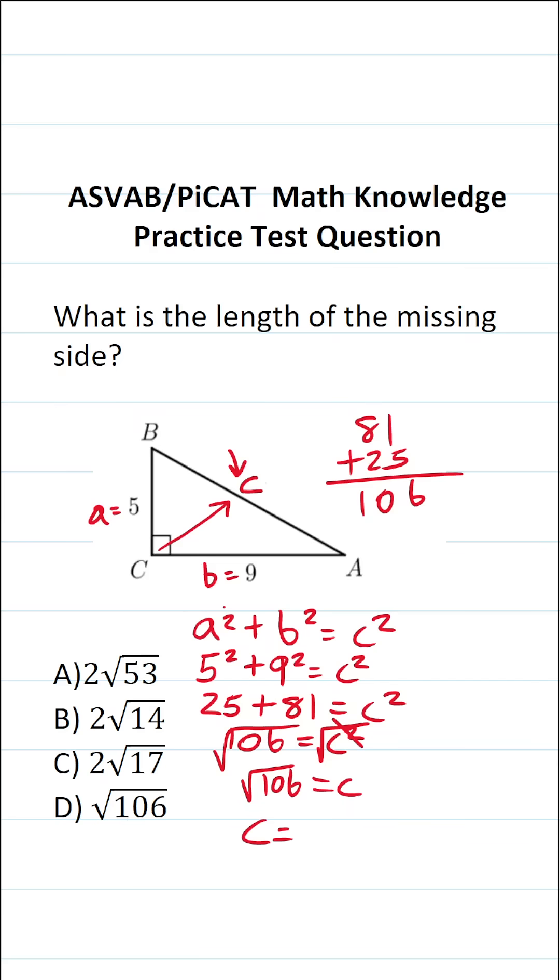Now, in this case, you wanna look at 106 and see if we can reduce this. And as it happens, we can't. 106 only has two factors, notably 53 and two, none of which are perfect squares. So in other words, c in this case is gonna be the square root of 106. So the answer to this one is D, of course.